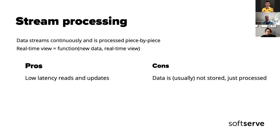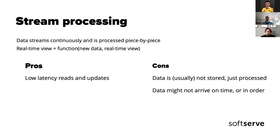There are problems with stream processing. Data in such systems is usually not stored — it's just processed once — so if our process changes, for example we add a field or change normalization, the data has already left the system. This causes problems with reprocessing. Another problem is that data might not arrive on time or in order. Most systems provide at-least-once processing, so sometimes data is processed out of order.